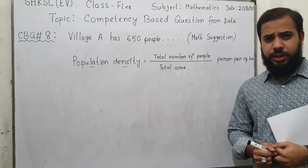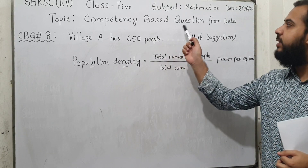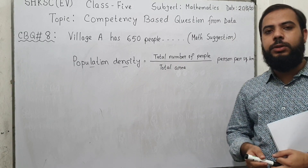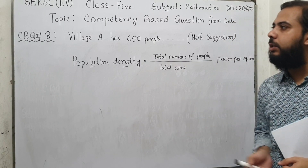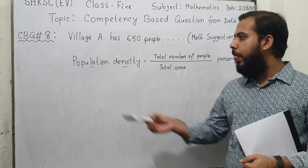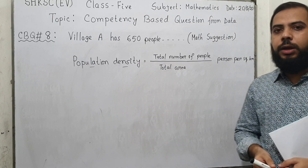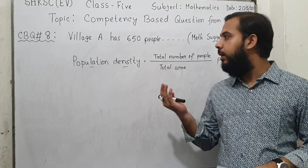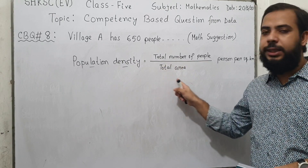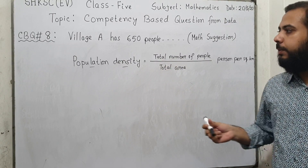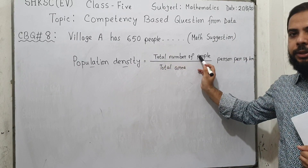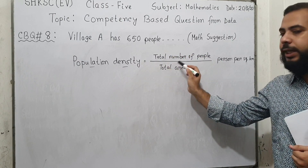Hello students, welcome to today's class. Our topic is competency-based questions from data. In the first semester, the question was related to tables, bar diagrams, or histograms. In this semester we will learn population density related problems. Population density means if we divide the total number of people of any country or village by the total area of that village or country, we get the population density. Population density is equal to total number of people divided by total area.